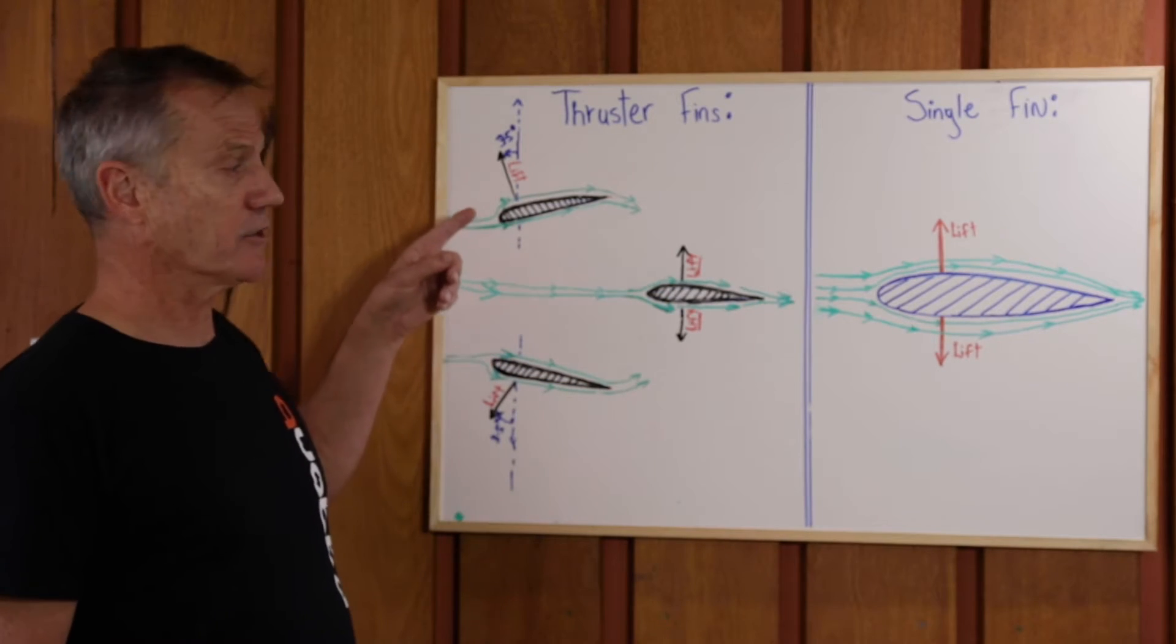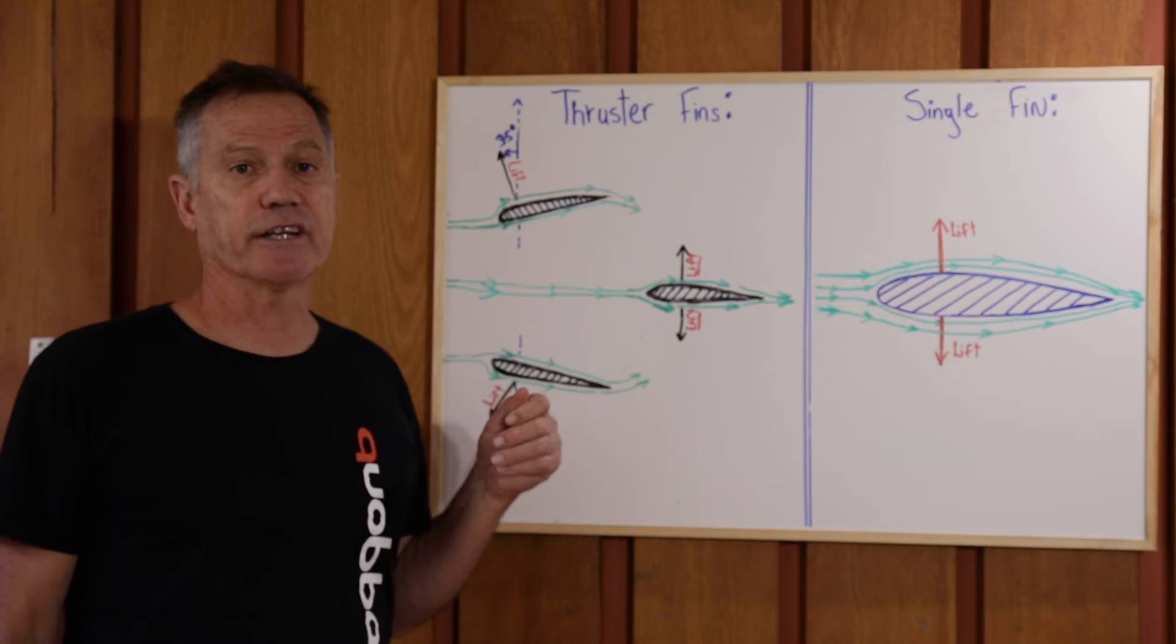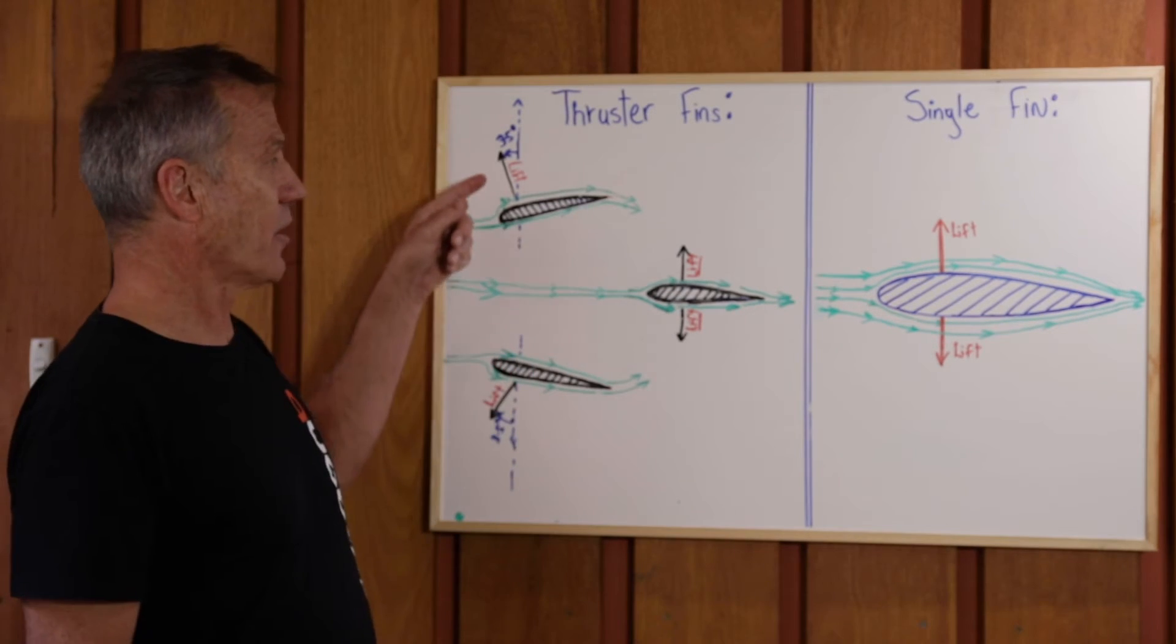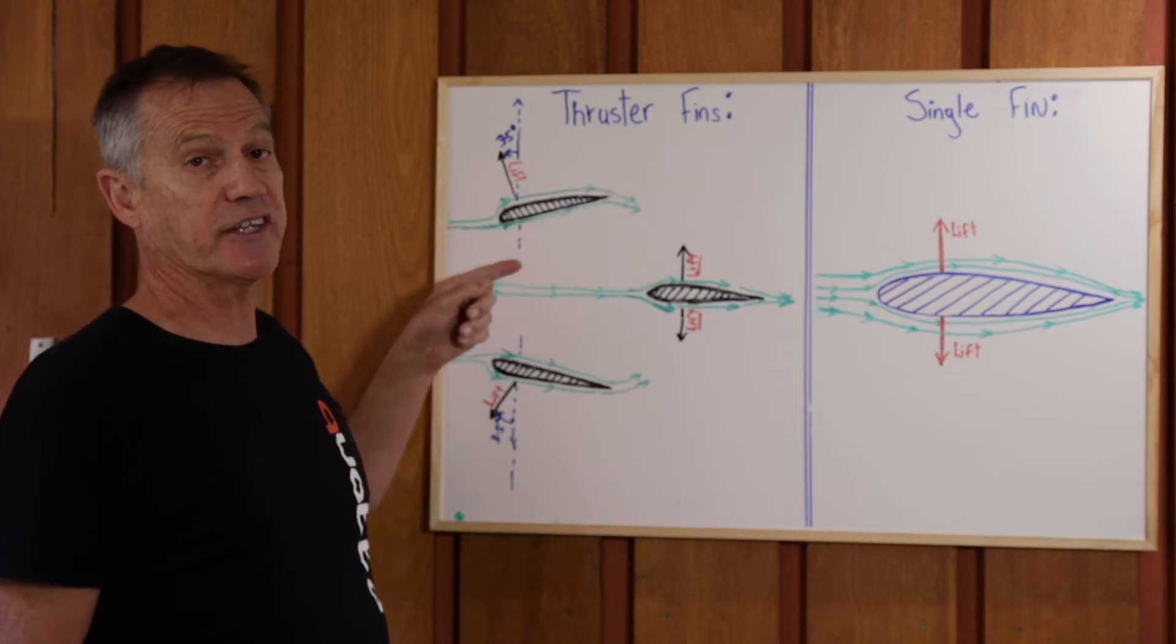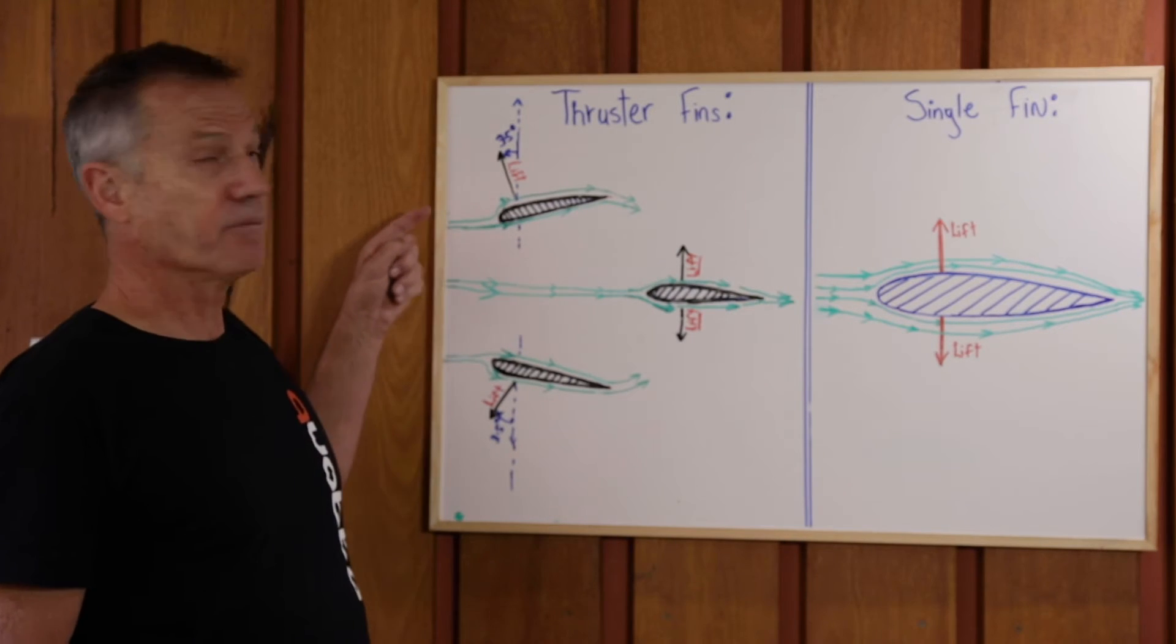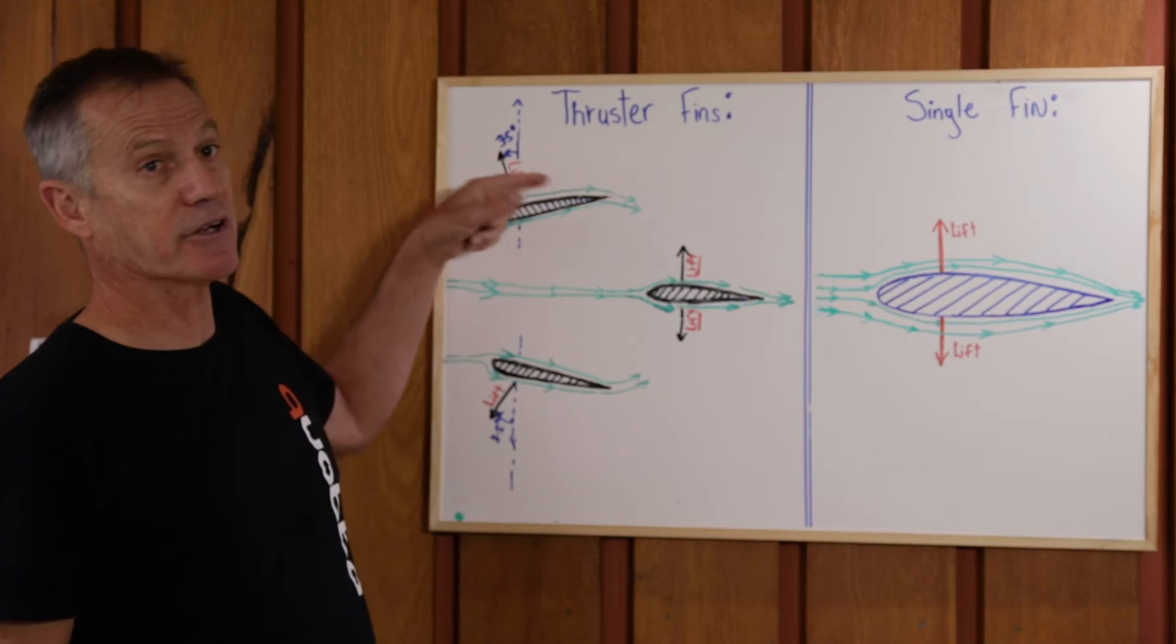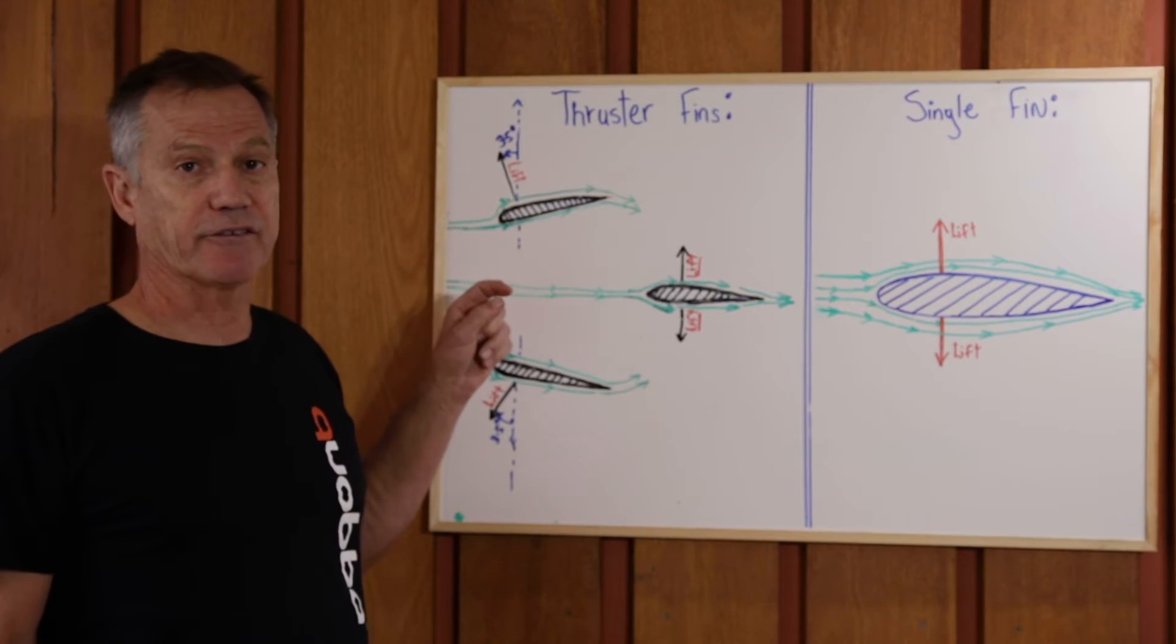But he also put these two side fins on, and the two side fins or thruster fins were sort of like half fins. One side, the outside, was much more foiled than the inside. So therefore, when water was traveling around the outside, it had to move at a greater speed because it was traveling a greater distance. Therefore, there was a lift.